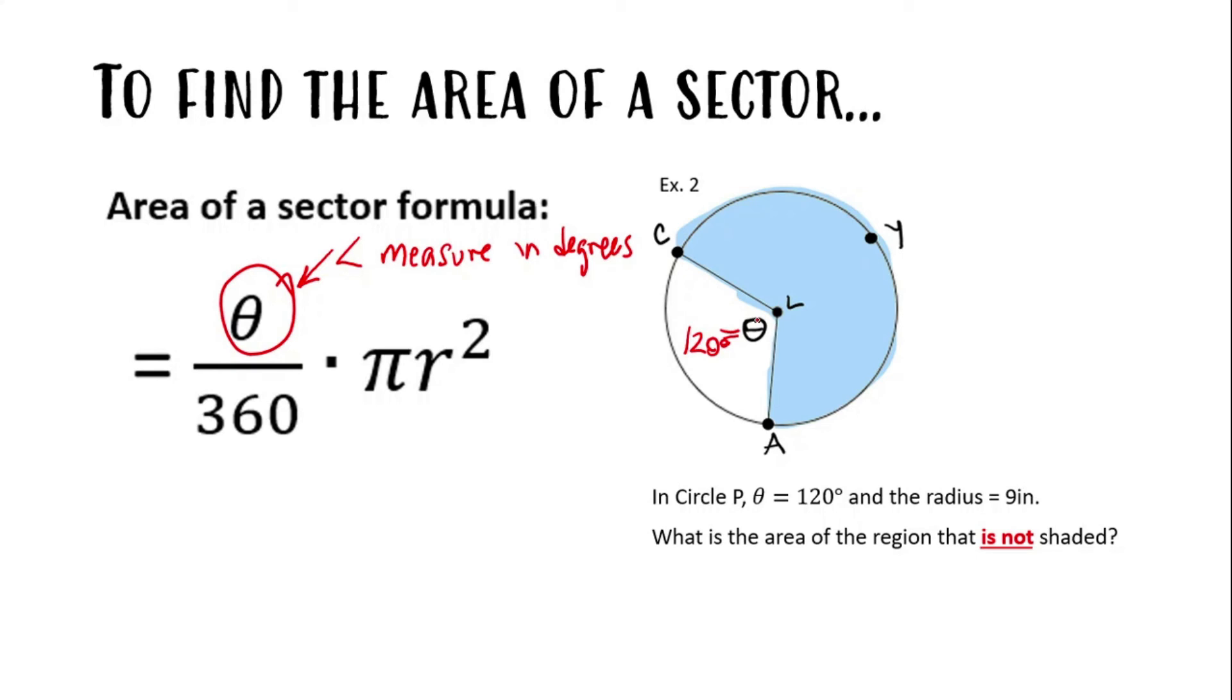The radius is equal to 9 inches, and the question says, what is the area of the region that is not shaded? Lucky for us, they gave us the angle measure in degrees of the area that is not shaded. Now all we have to do is plug this stuff into the formula.